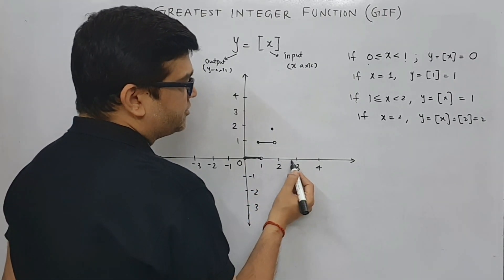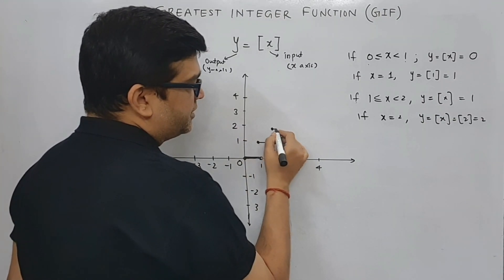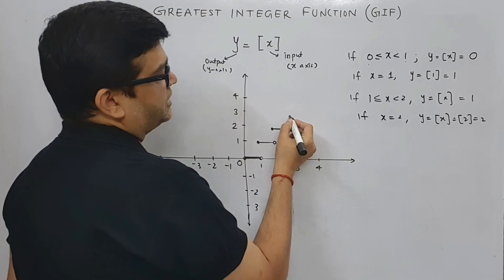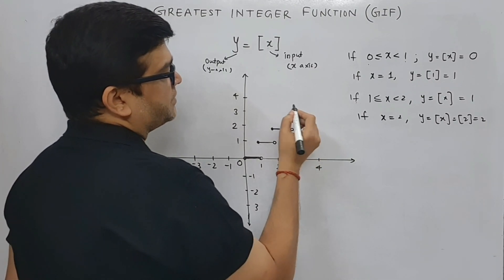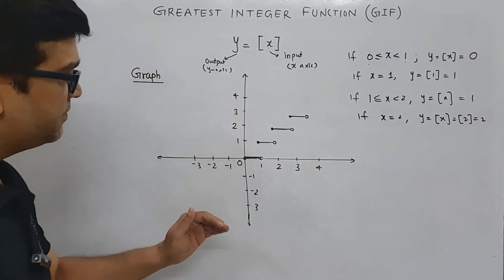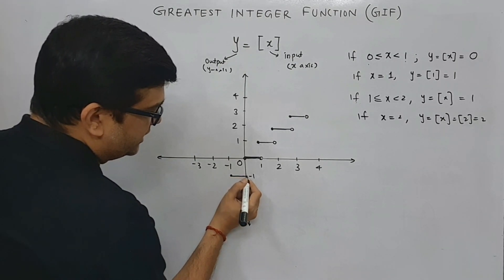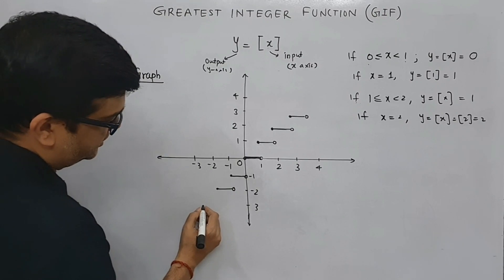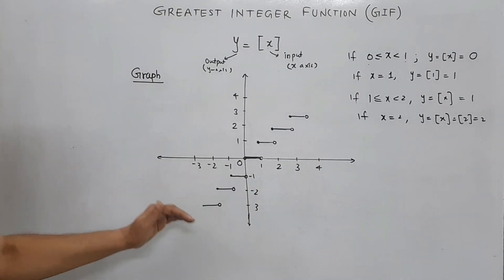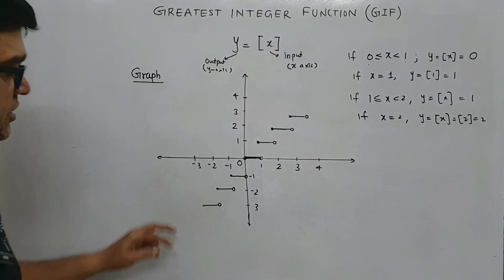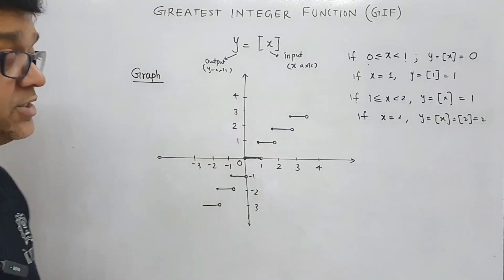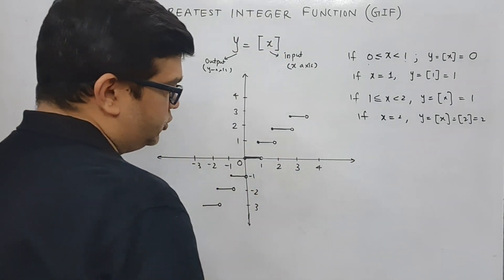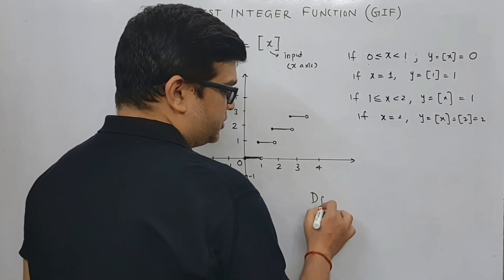Similarly, if x is between two and three, box of x remains at two, and the moment the input is three, the output jumps to three. This procedure continues the same way on the negative side as well. The graph of the greatest integer function looks like a staircase, which is why it is also referred to as the step function.